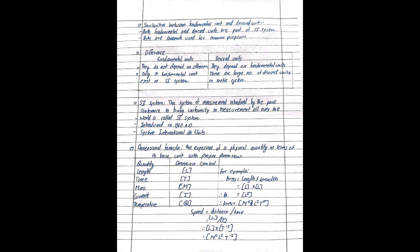The SI system is a system of measurement introduced at the Paris conference to bring uniformity in measurement all over the world. The SI system is a little bit different. You can understand this definition.